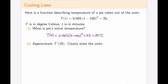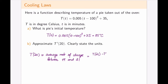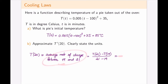To approximate T′(20), I use the average rate of change between t = 19 and t = 21. Before computing, we expect a negative answer because the pie is cooling down toward room temperature. Indeed, the result is −0.8 degrees Celsius per minute. So in 20 minutes, the pie is cooling down at the rate of 0.8 degrees Celsius per minute.